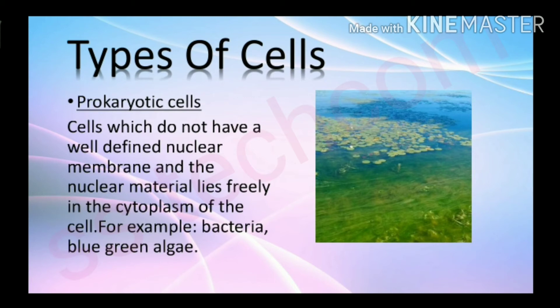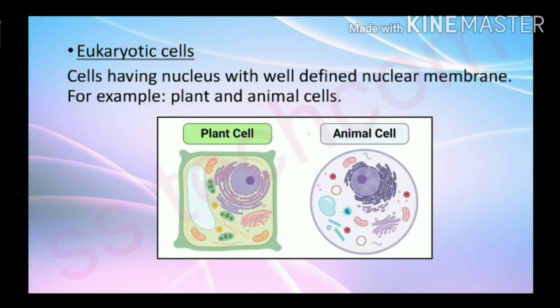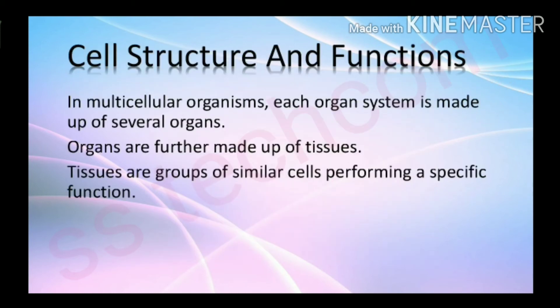Examples of prokaryotic cells include bacteria and blue-green algae. Eukaryotic cells are cells having a nucleus with a well-defined nuclear membrane, for example plant and animal cells.